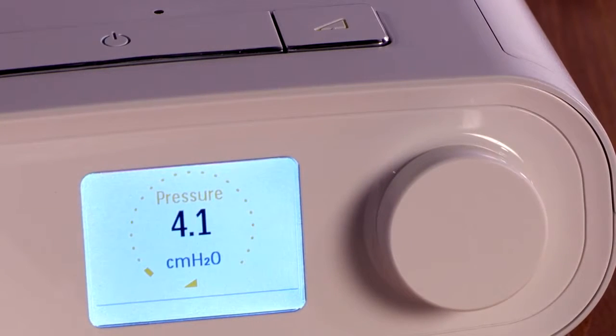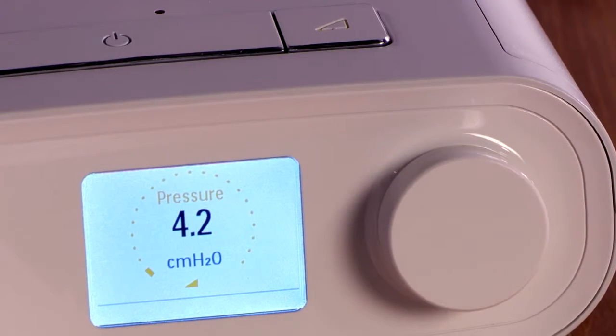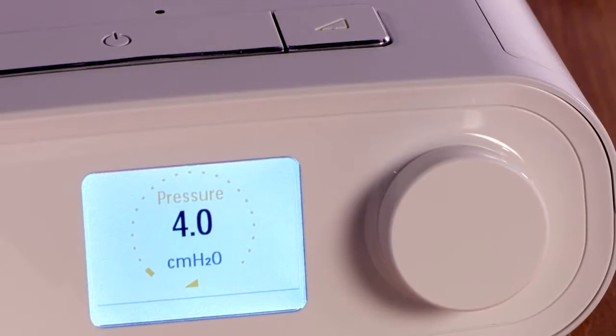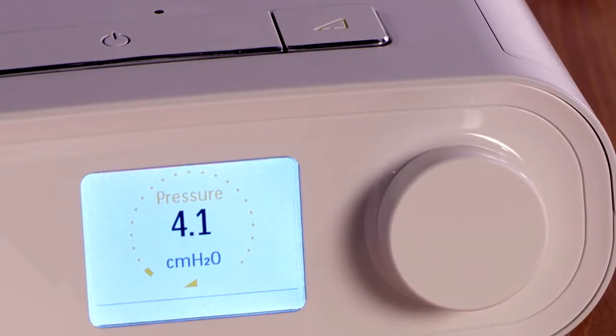Ramp reduces the air pressure when you are trying to fall asleep and then gradually increases it to your prescription pressure. To stop or restart ramp, simply press the ramp button. You can do this as often as you like during the night.